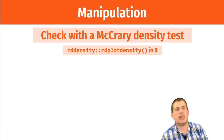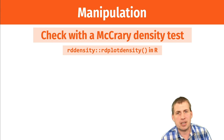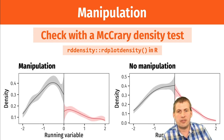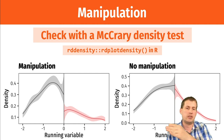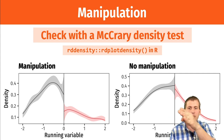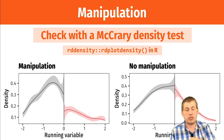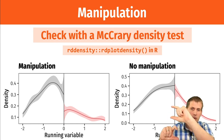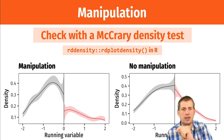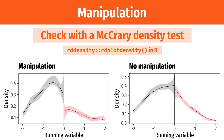There are ways to test for this manipulation. In the Causal Inference Mixtape reading, Scott Cunningham talks about the McCrary density test, which you can run in R with the rdplotdensity function. This lets you graph the distribution of your running variable. If there's manipulation, you'll see lots of bunching right before the cutoff and very little after — with confidence intervals that don't overlap — indicating more people than expected on one side. With no manipulation, the distribution is fairly continuous throughout and the confidence intervals overlap.